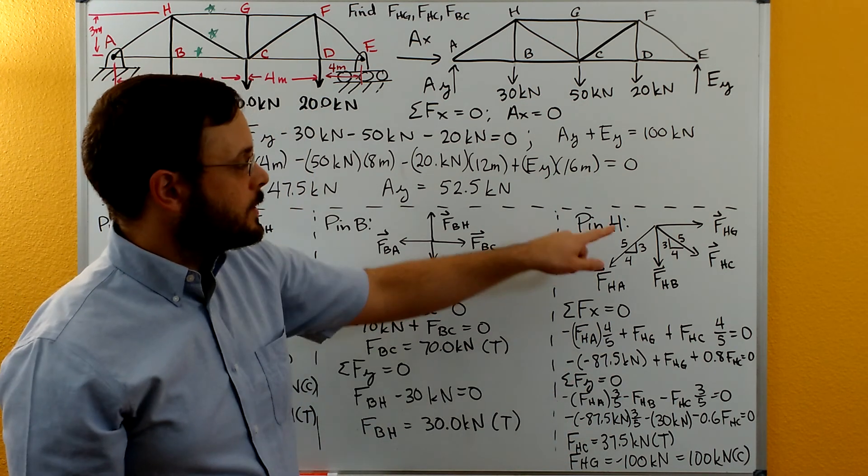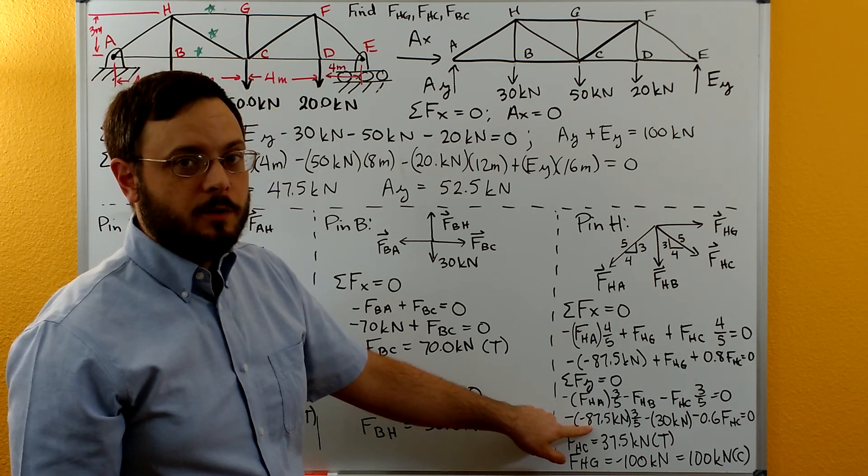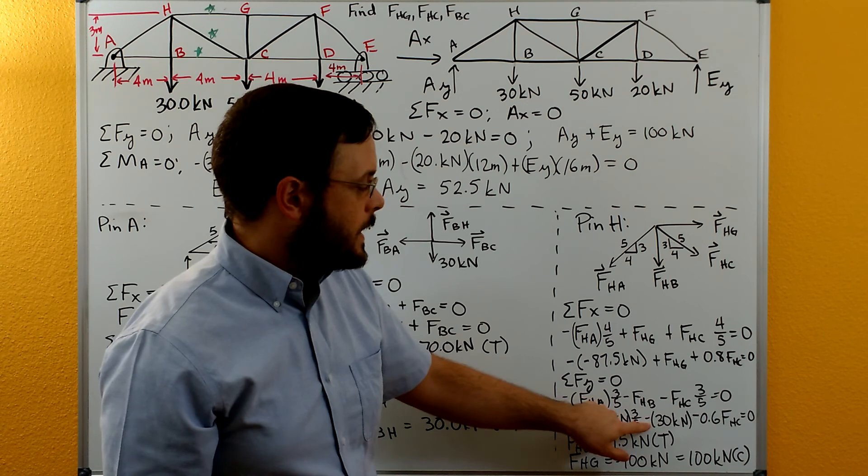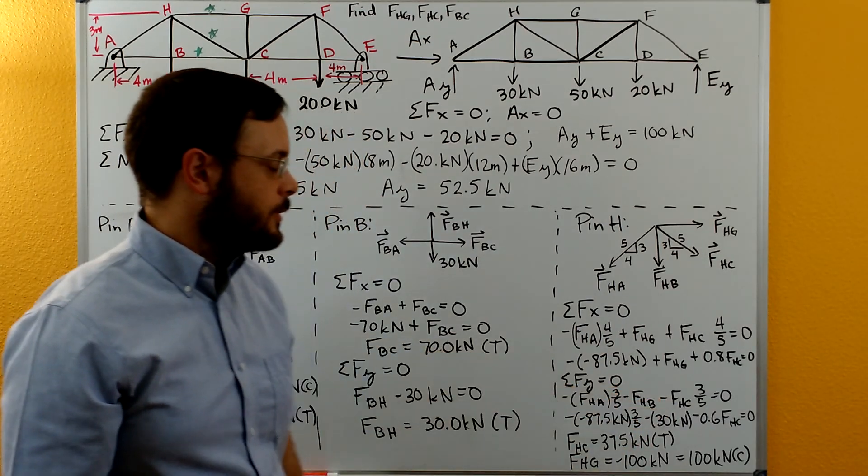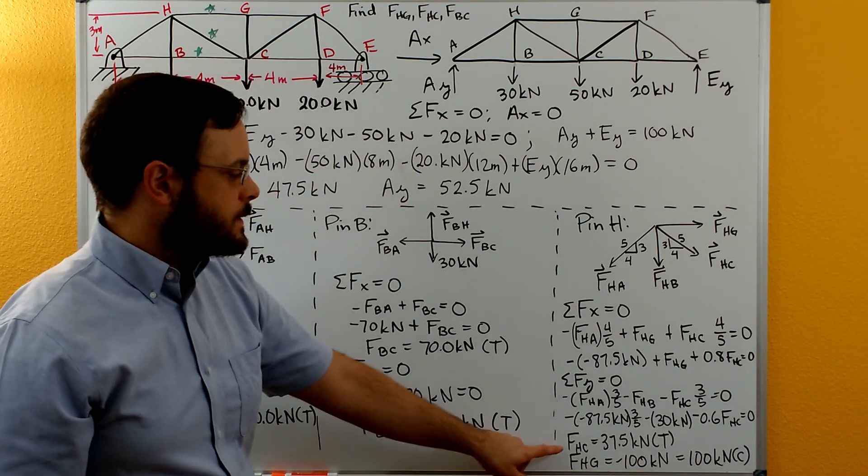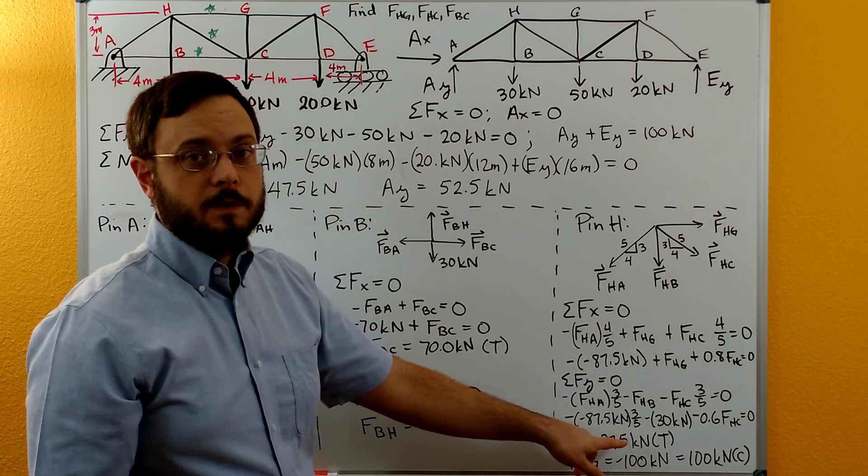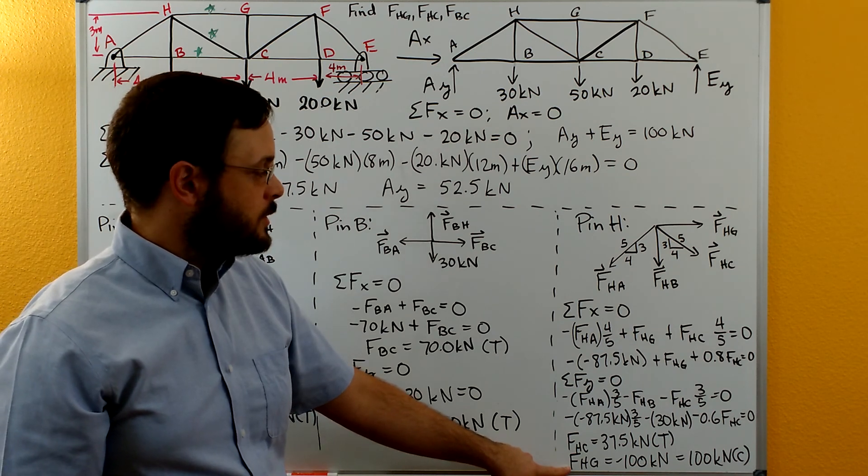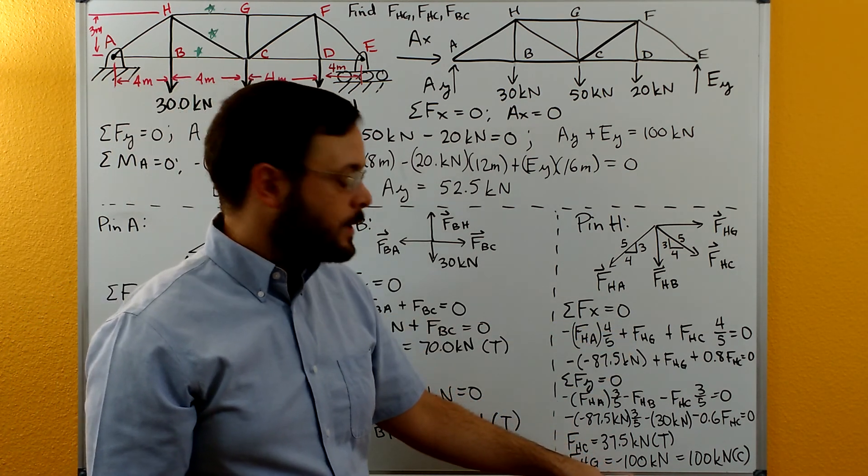Again, we plug our numbers in. Minus sign here from the direction in the free body diagram, minus sign here for the negative 87.5 that we solved for earlier. Negative, but then a positive 30 kilonewtons that we solved for earlier with FHB. And then FHC is our unknown. So we can solve for FHC. We'll get a positive 37.5, so that must mean it's in tension. Then we can solve for FHG by plugging back into this equation. We get negative 100 kilonewtons, so that must be 100 kilonewtons in compression.